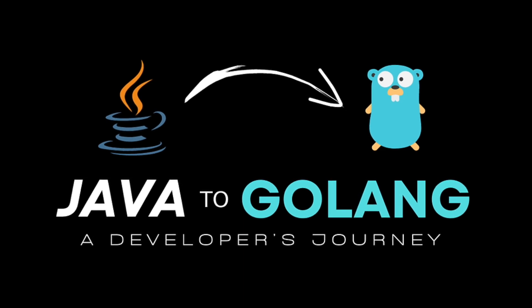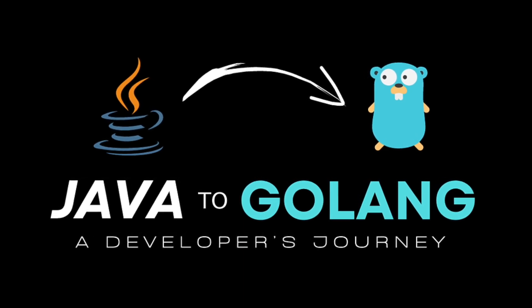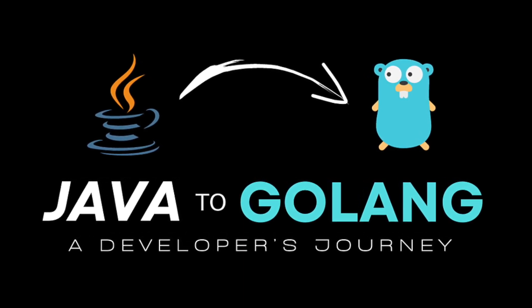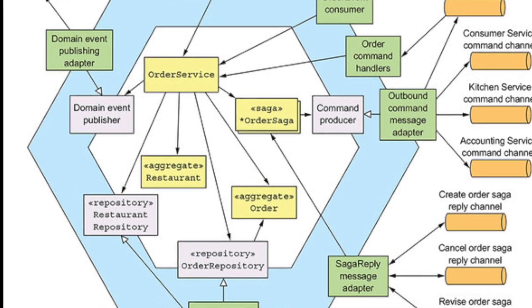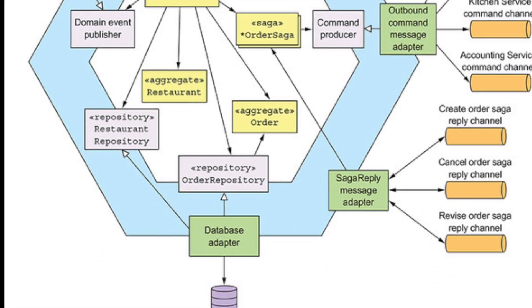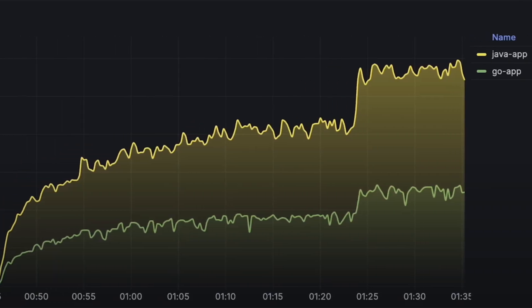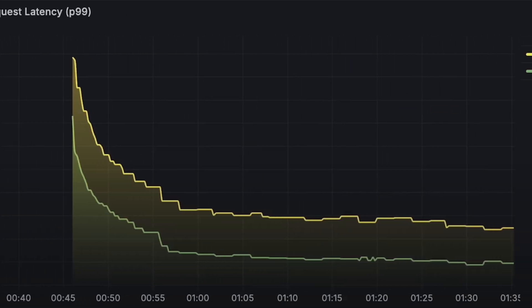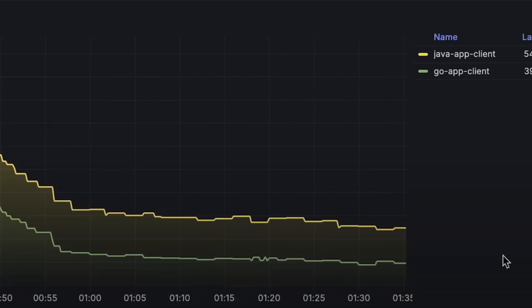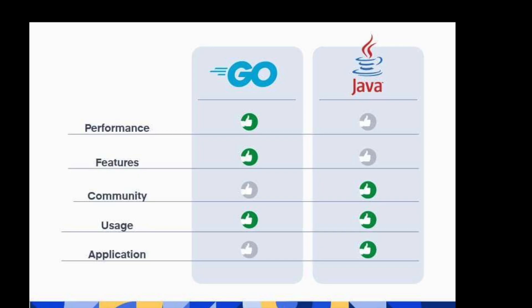Uber moved their geofence service from Java to Go and saw latency drop by 70%. But the reality is modern architectures often use both: Java excels at complex business logic and processing, while Go shines at network services and high-throughput APIs.